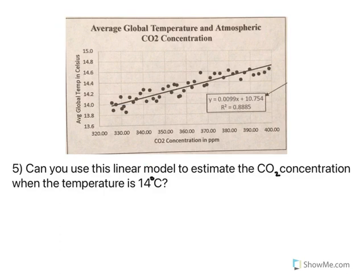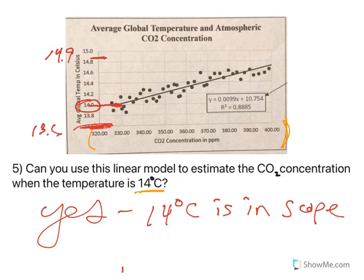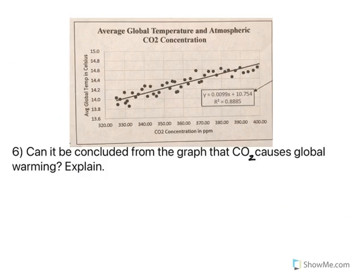Can we use this linear model to estimate the CO2 concentration when the temperature is 14? We need to consider the scope of the model, which is generally talked about in terms of the x-values. Is 14 degrees Celsius within the scope of x-values? Here's 14 degrees Celsius on the graph — looking over, there are data points in there, so the answer is yes. Anything from about 13.6 to 14.9 is within scope; anything above 14.9 or below 13.6 would be outside the scope of our x-axis.